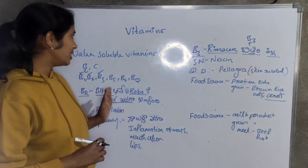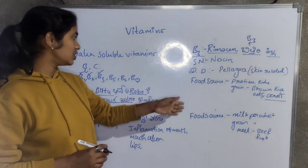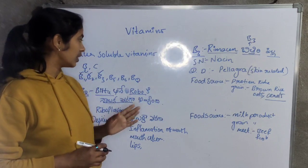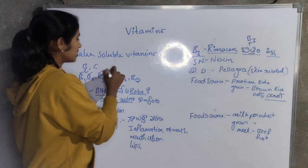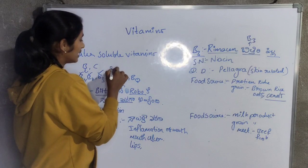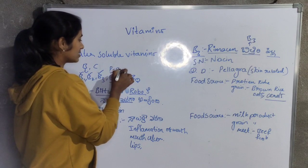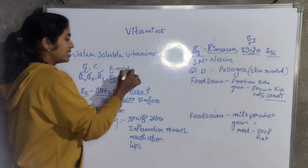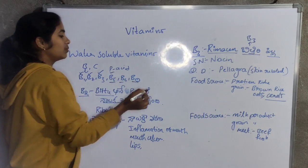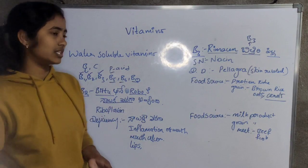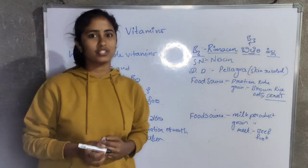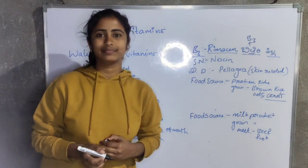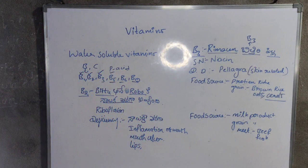So this is about B1, B2, and B3 vitamins. In the next class, we will cover B5 — pantothenic acid — B6, and B12. That is all about today's class. Thank you so much, see you in the next class.